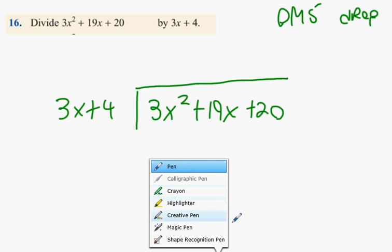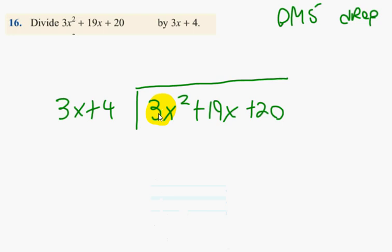Step 1, identify your first part of each question. So this is the first part of the sum that's been divided, and this is the first part of what you're dividing it by.